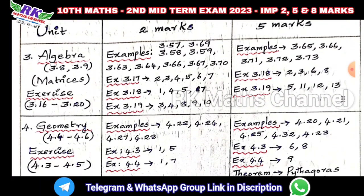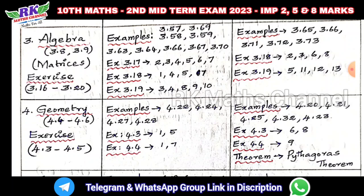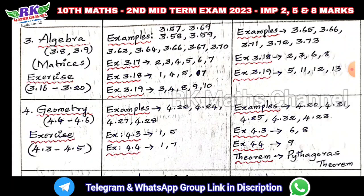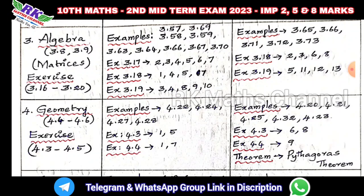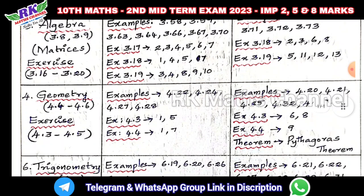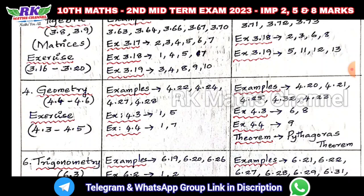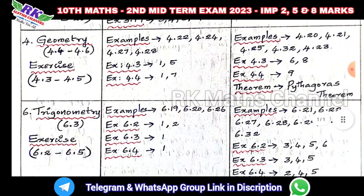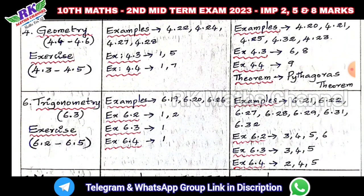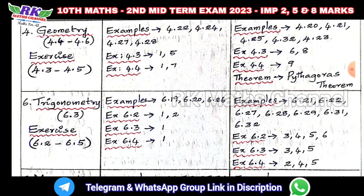Geometry — Pythagoras theorem and Construction of Tangents. Exercise 4.3 and 4.5 with important 2 mark and 5 mark questions. For 5 mark questions, mostly theorem-based. 4th chapter important questions and 6th chapter Heights and Distances — mostly 5 mark questions in the public exam, covering Heights and Distances.